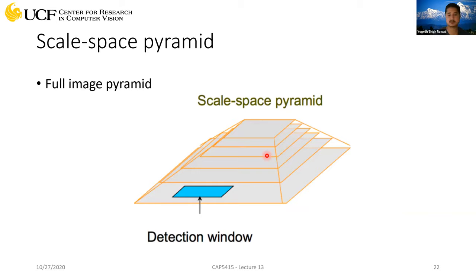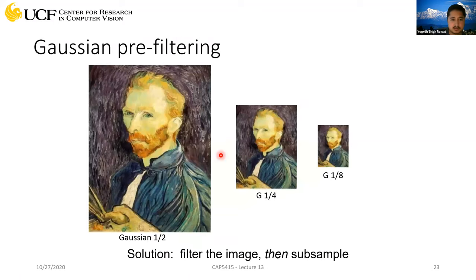This is called a scale space pyramid. The original resolution is at the top; you keep resizing to smaller resolutions. In this example we have six different scales — this is called the image pyramid. Let's see how to build it: for a given image, we scale it to half at every step. Before rescaling, we perform Gaussian prefiltering.